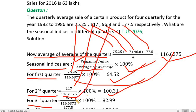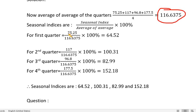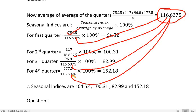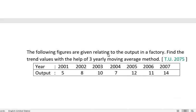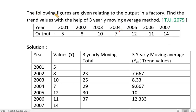The second quarter seasonal index is 117 divided by the average of averages multiplied by 100, giving 100.31. The third quarter seasonal index is 96 divided by the average of averages multiplied by 100, which equals 100. The average of averages is 96.8.